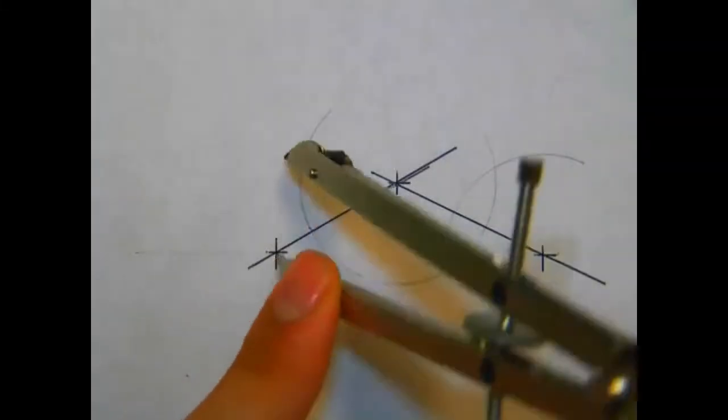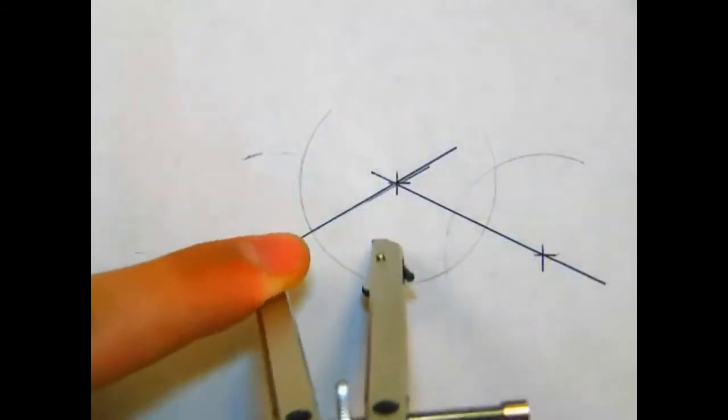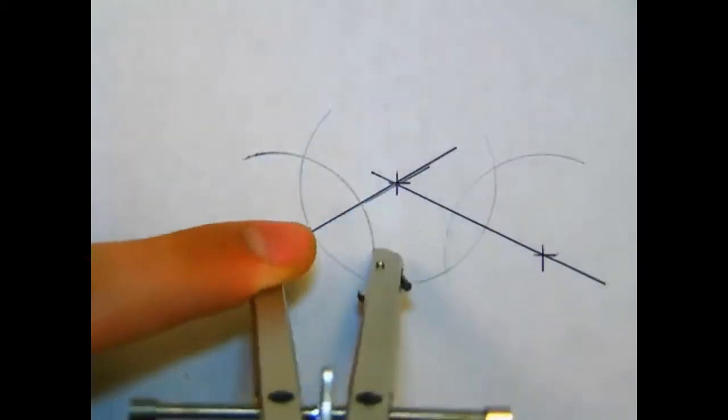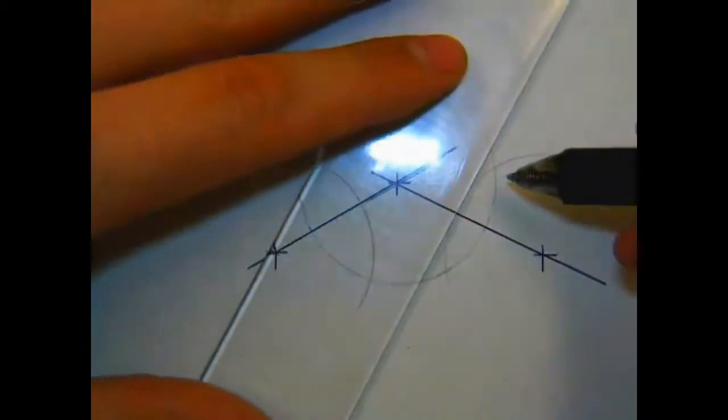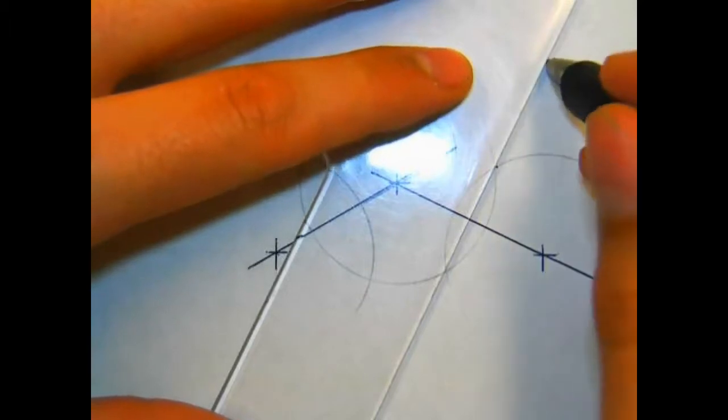When doing this process on an actual technical drawing, remember to leave your layout lines as light as possible. We don't want to see the layout lines, only the lines that are part of our technical drawing.